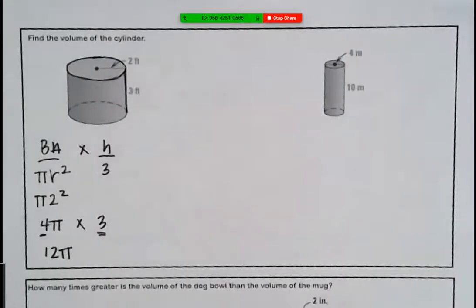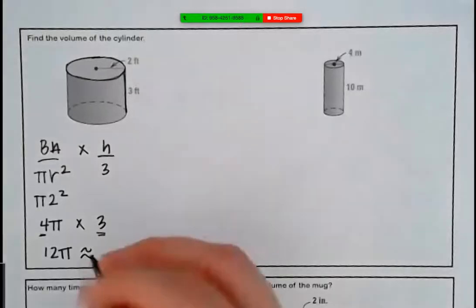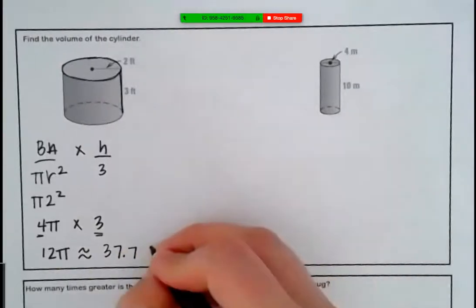What is our radius? Two. So let's plug in two, so pi two squared. What is two squared? Four. So let's just leave this as four pi for now. Times our height, how tall is that cylinder? Three. So now we're gonna take four pi times three, which is 12. Now everyone let's take 12 times 3.14 in our calculator. 37.68, so should we go with 37.7 feet cubed.